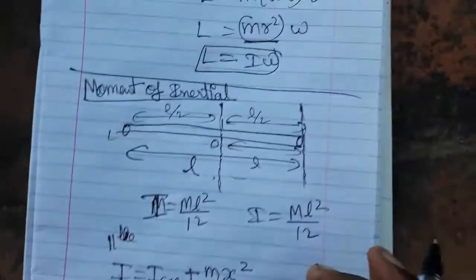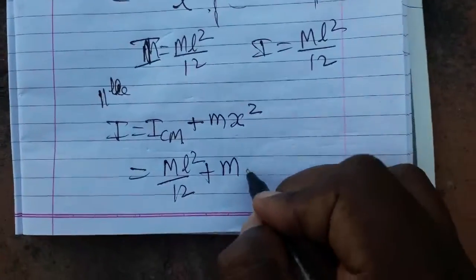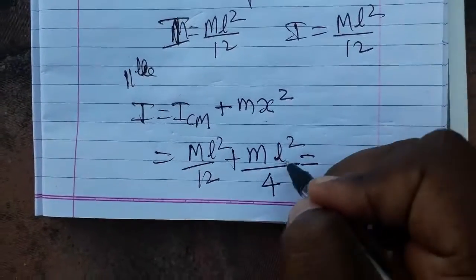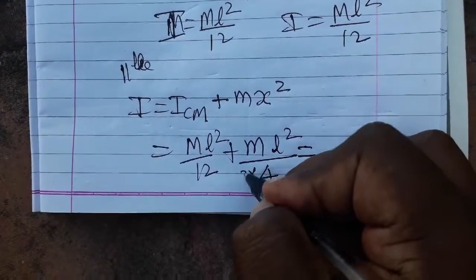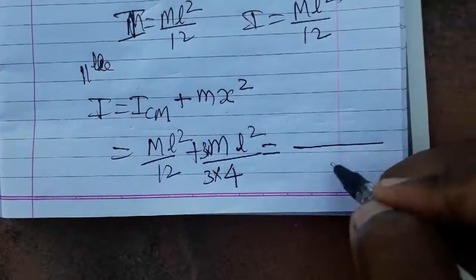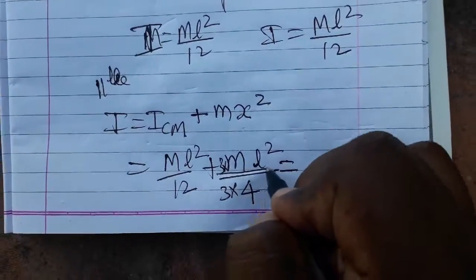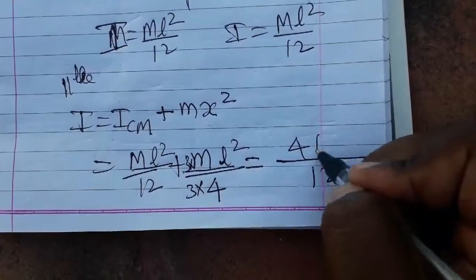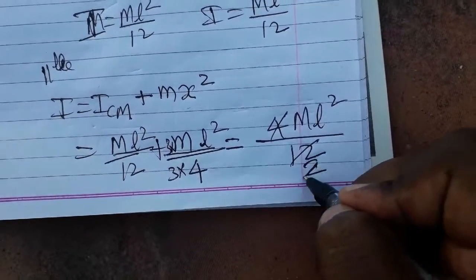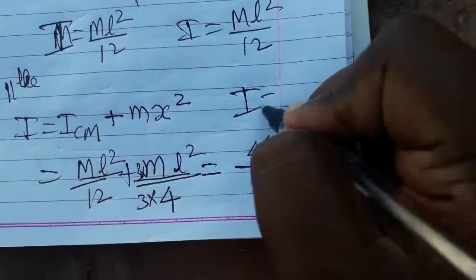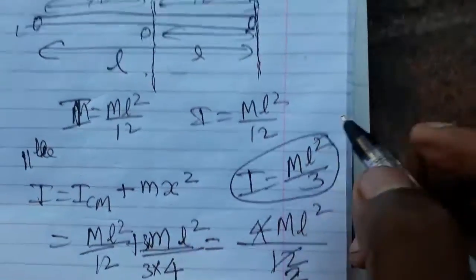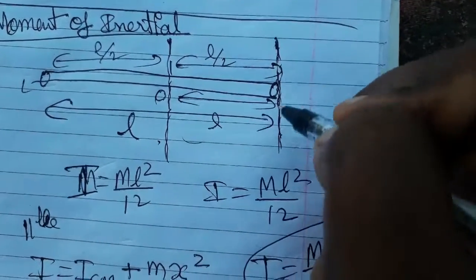Adding the term m times (l/2)², which is ml²/4, to the center of mass inertia ml²/12 — making the common denominator 12 — we get ml²/12 + 3ml²/12 = 4ml²/12, which simplifies to ml²/3. So the total moment of inertia at the edge of the rod is ml²/3.